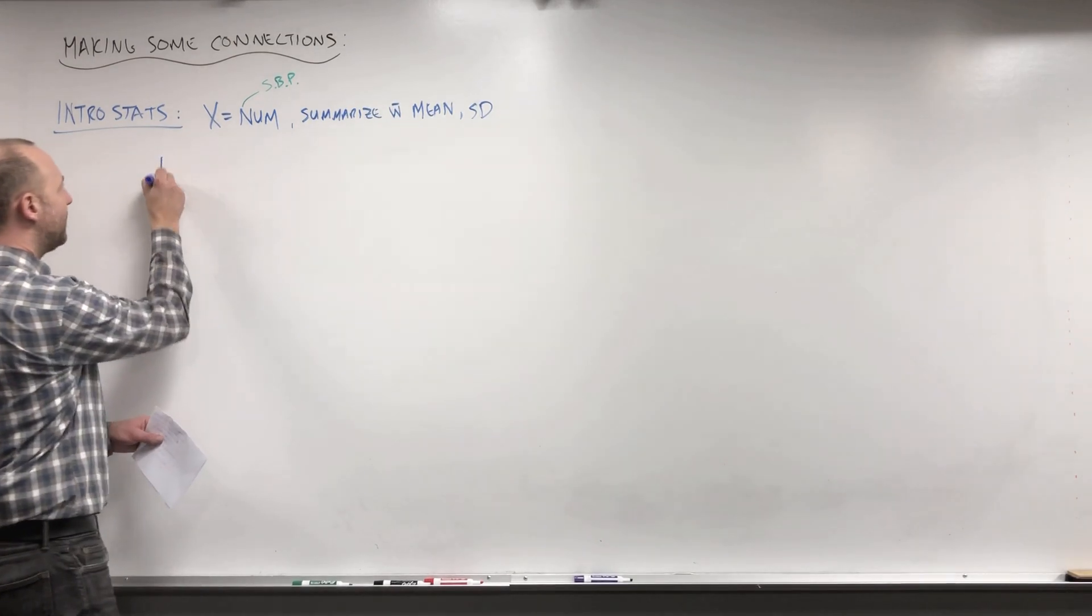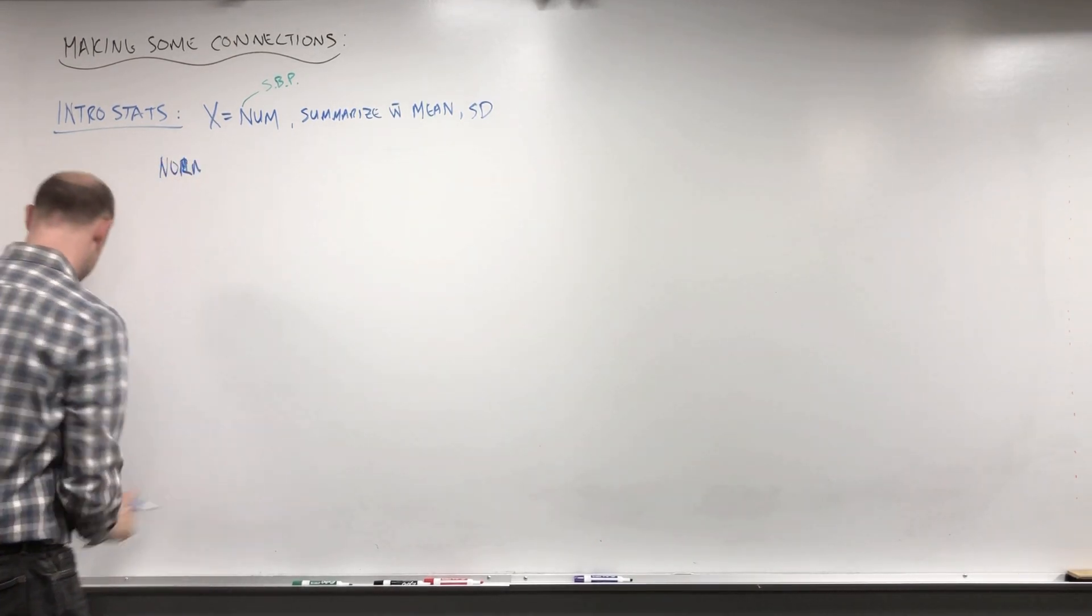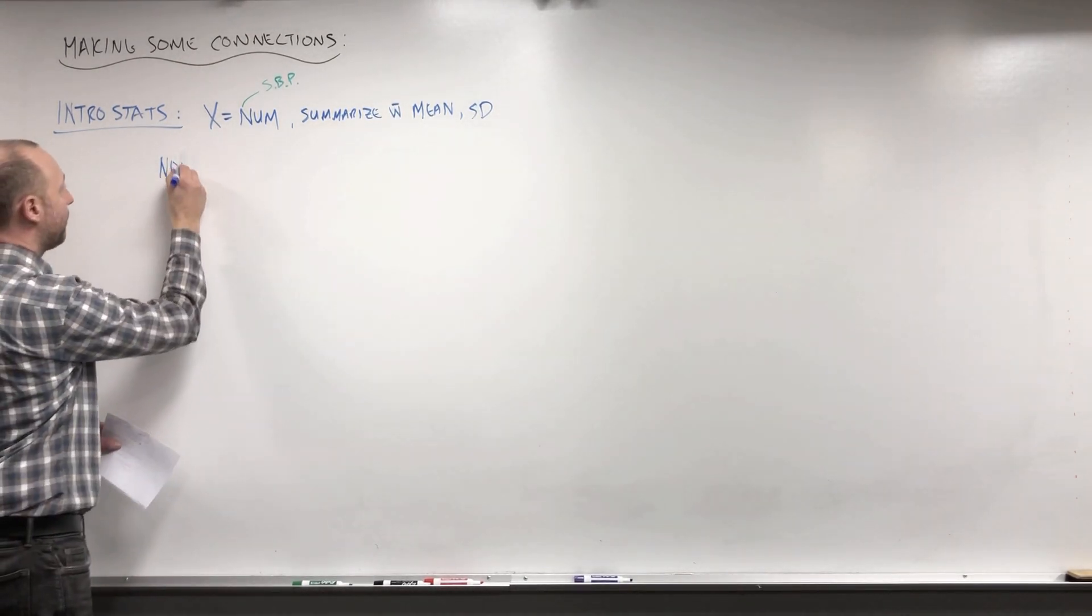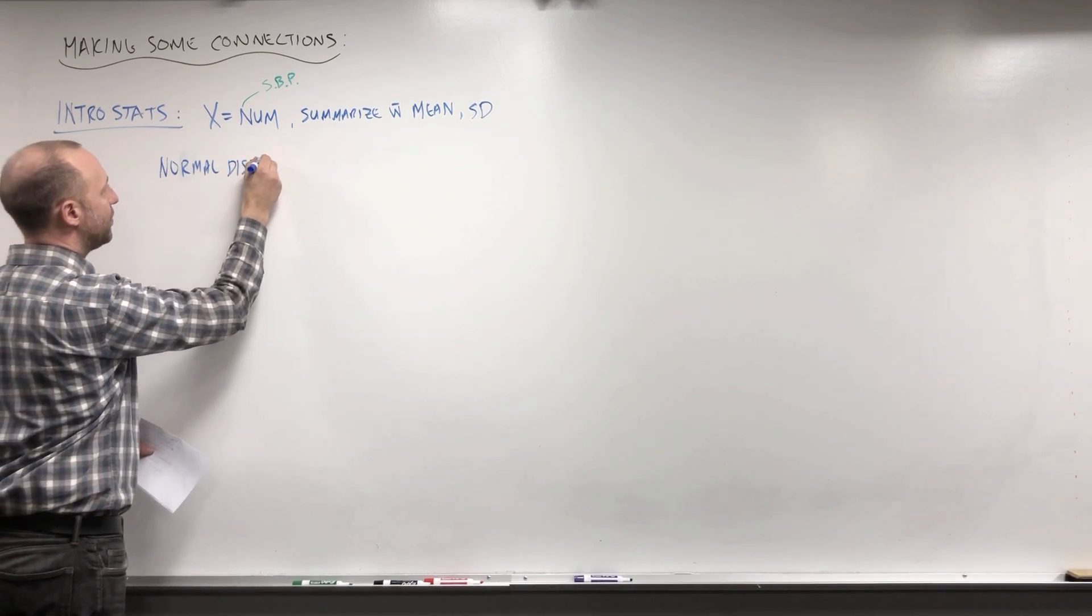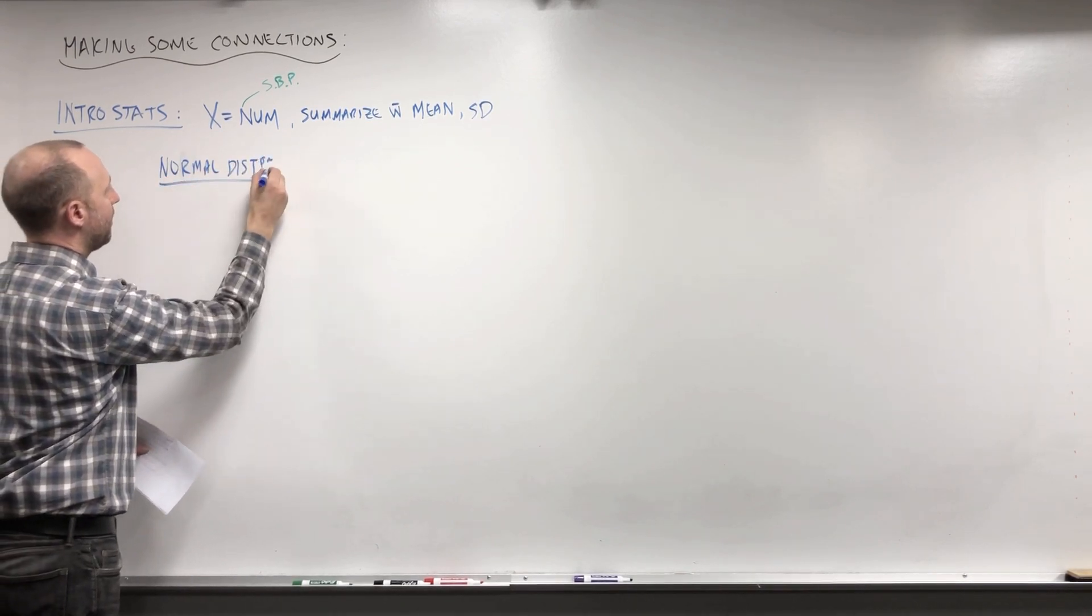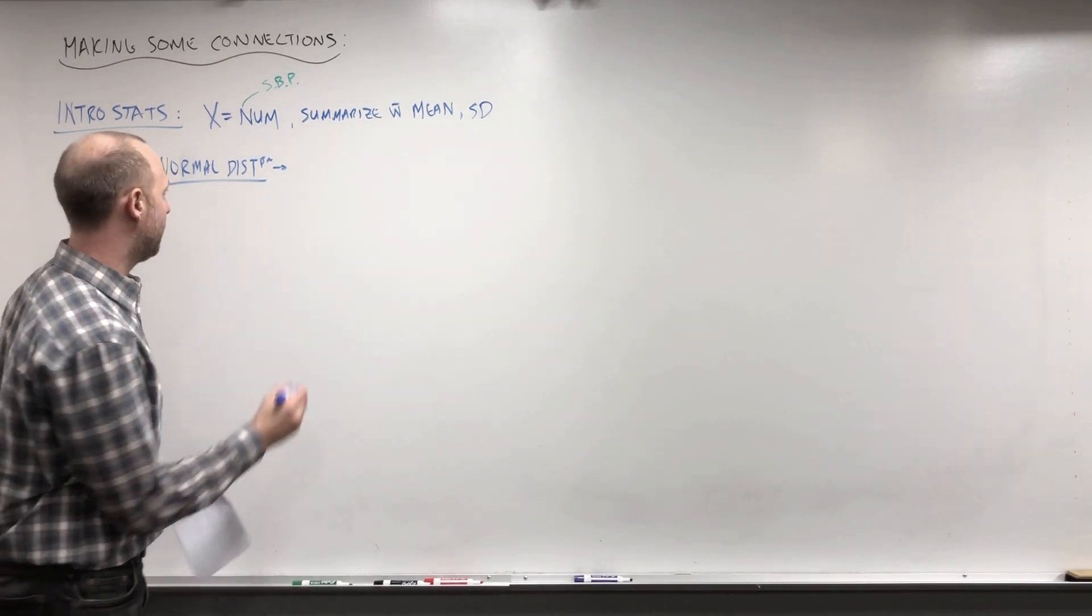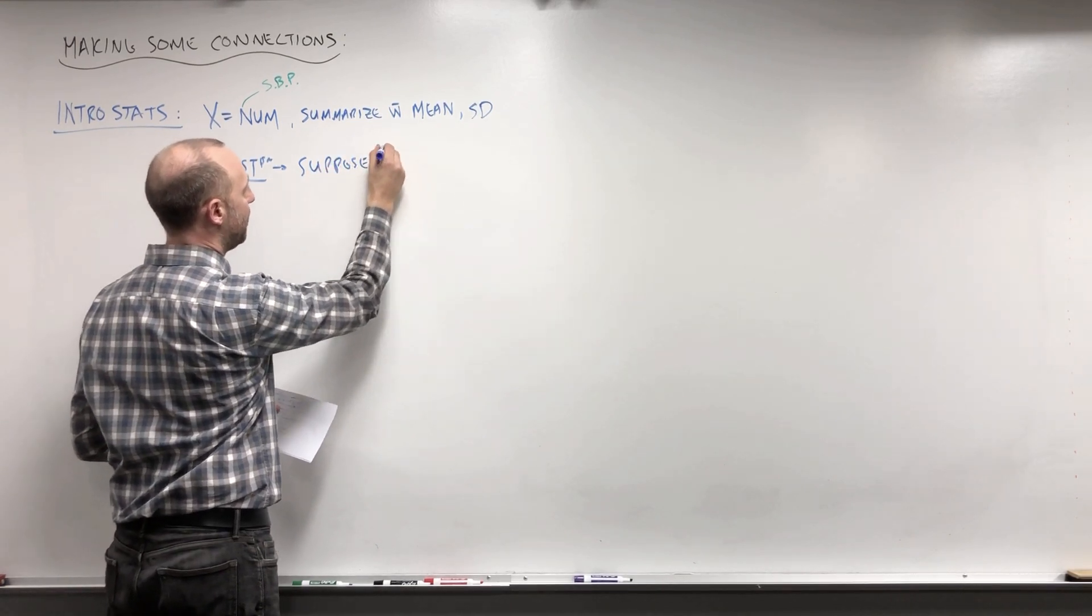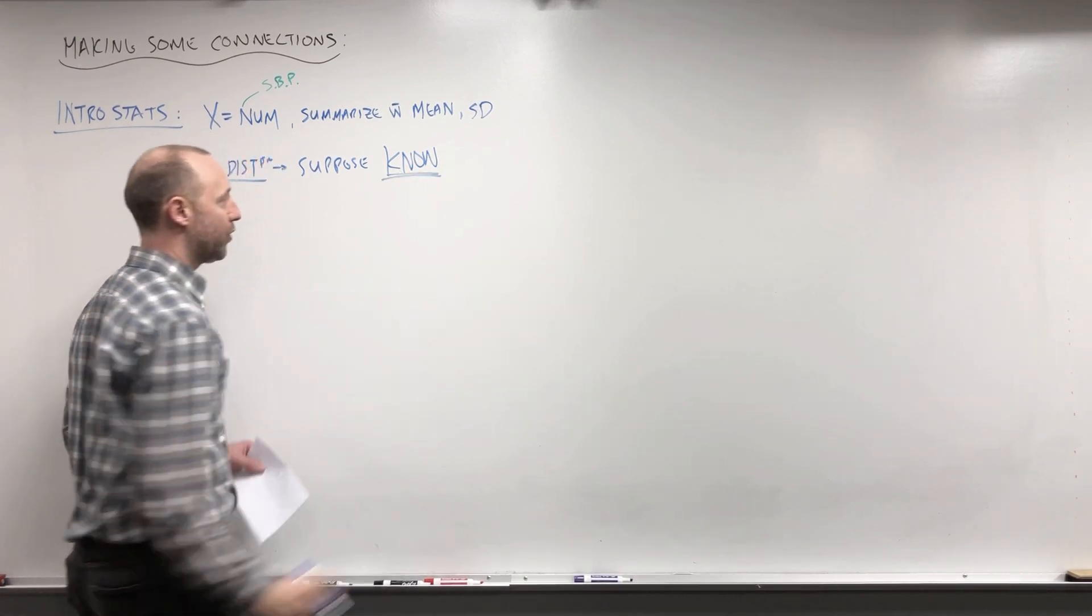Then you tend to move into a normal distribution, and this is the kind of theoretical or what I often refer to as pretend world. You do things like this, you say suppose that you know - this is the theoretical or pretend world.